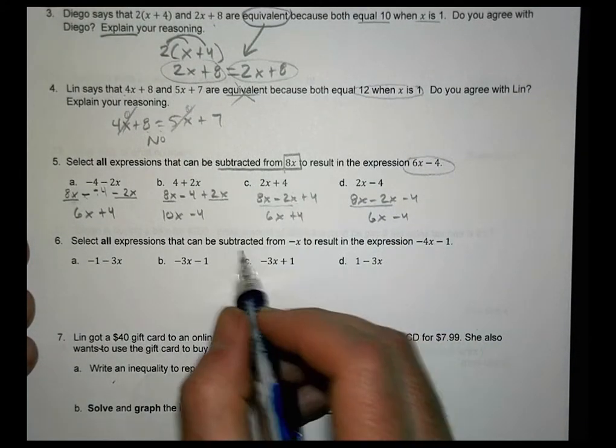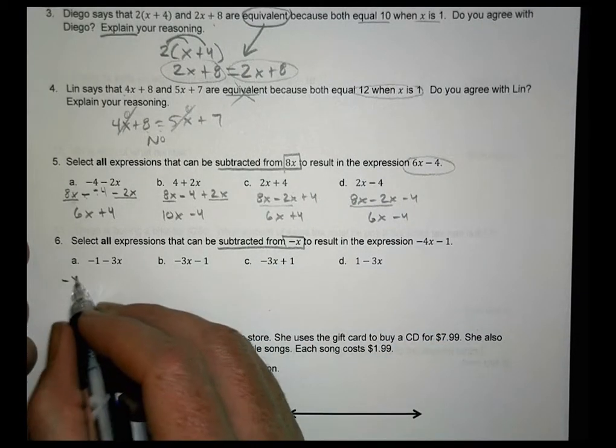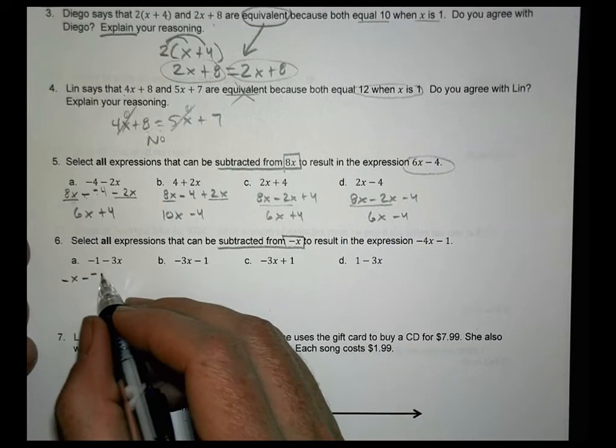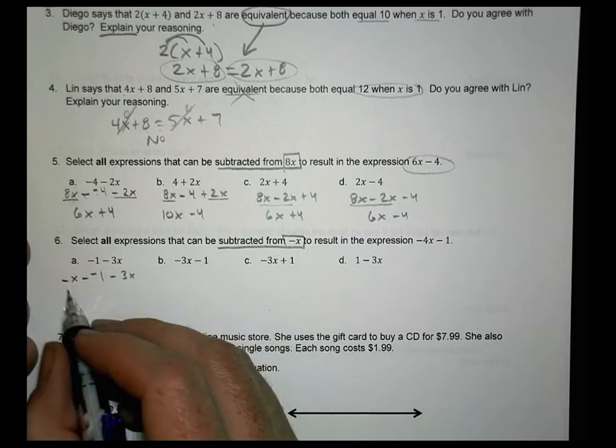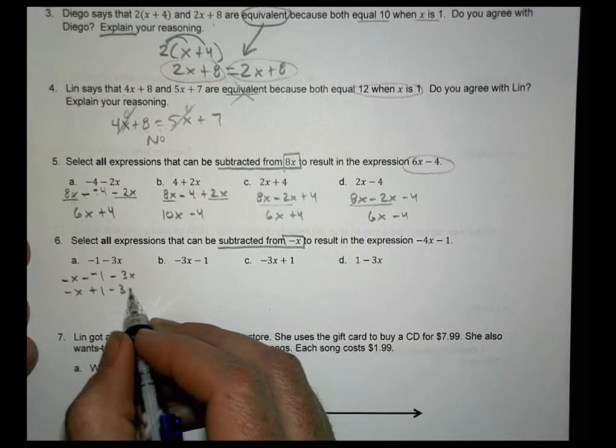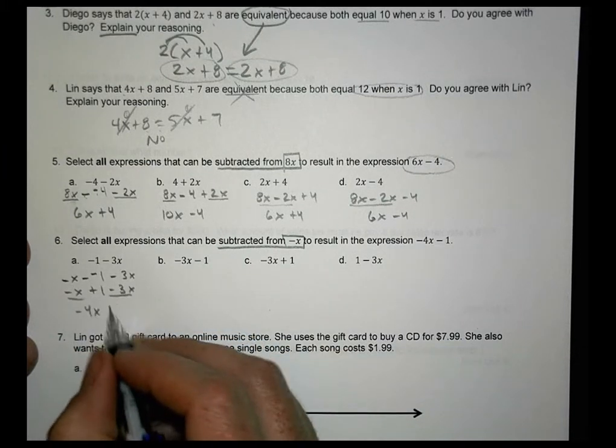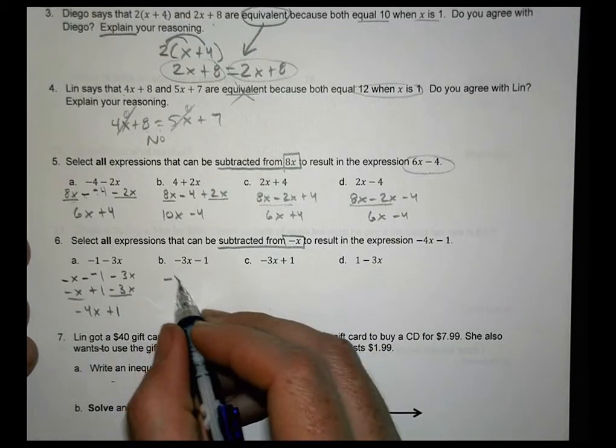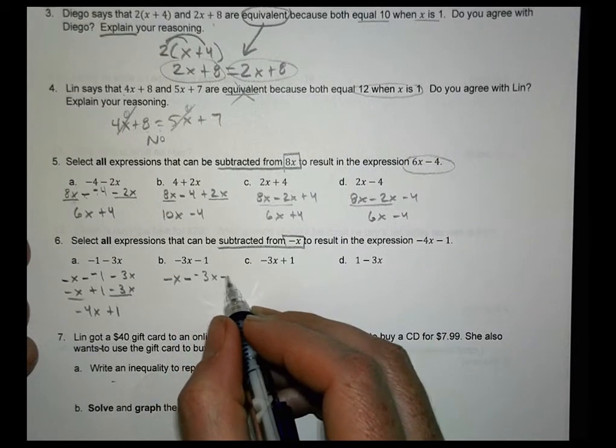All right, subtracted from negative x. So we're going to put a negative x in front. Subtracted from minus minus 1 minus 3x. So this is subtracted from that. So we have negative x. Really, this is plus 1 minus 3x. I can combine the like terms. This is negative 4x plus 1. Doesn't match, so we'd say no. So this one, we're going to do negative x and subtract from it minus 3x minus 1.